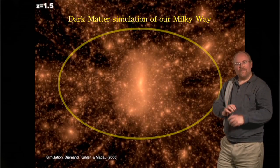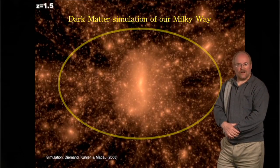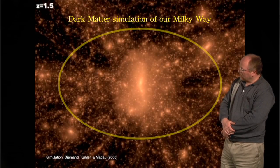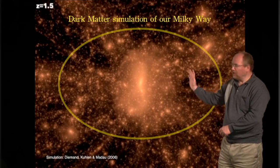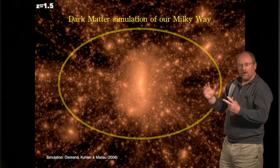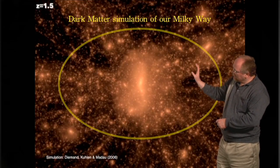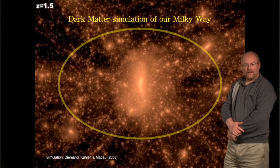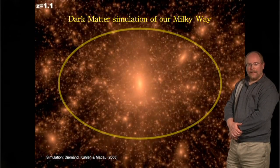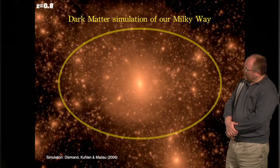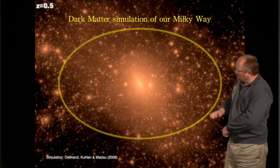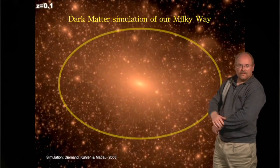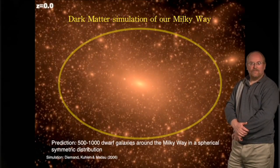I show you here a dark matter simulation of our own Milky Way — how the mass distribution of the dark matter is expected to be around the Milky Way. This is all dark matter, shown here in bright colors. It's a time movie showing how these different dark matter halos accumulate and merge together to form a Milky Way halo. You can see initially a large number of sub-halos that form and merge together to build a bigger and bigger halo right in the center, and over time — indicated here with the redshift — we have a system that we think looks very similar to our own Milky Way.